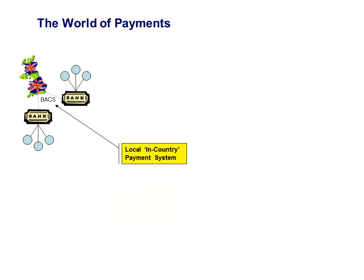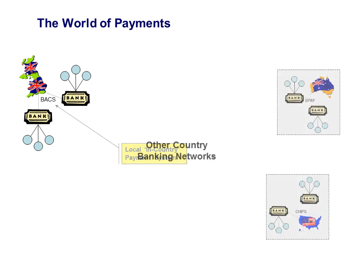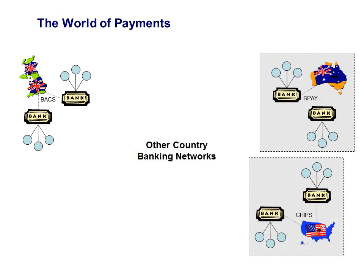Each country has its own domestic clearing and settlement system. In the United States, it's the clearinghouse; in the United Kingdom, it's BACs; and in Australia, it's run by CardLinked, or BPAY.